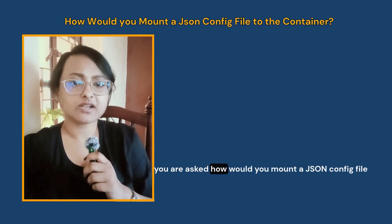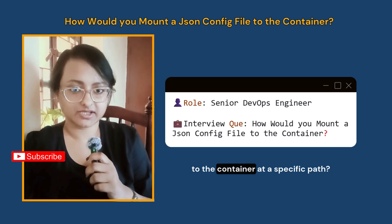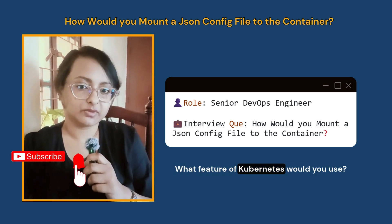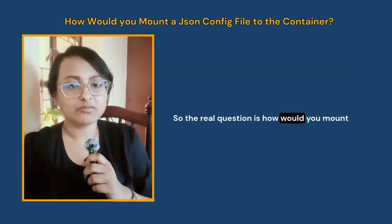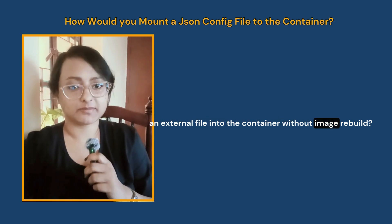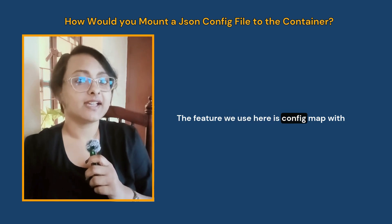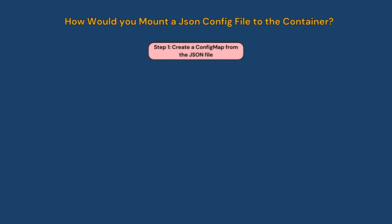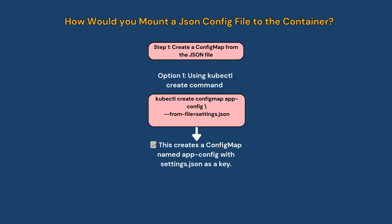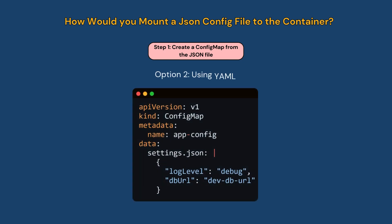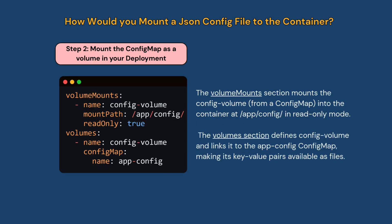In your DevOps interview you are asked: how would you mount a JSON config file to the container at a specific path? What feature of Kubernetes would you use? The real question is how to mount an external file into the container without rebuilding the image. The feature we use is ConfigMap with volume mount. Step one: create a ConfigMap from the JSON file using either kubectl create command or a YAML file. Step two: mount the ConfigMap as a volume in your deployment. With this, your container gets the JSON file at the exact path, and you avoid baking it into the image.